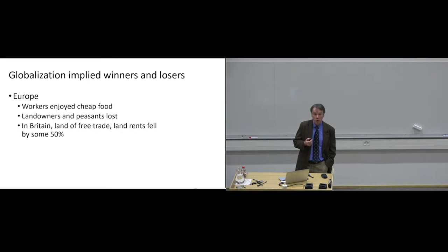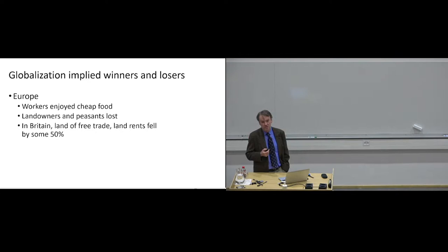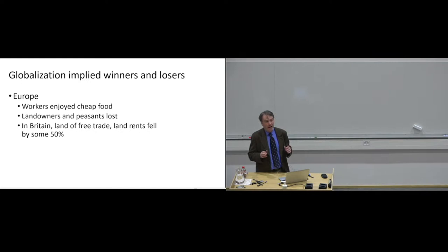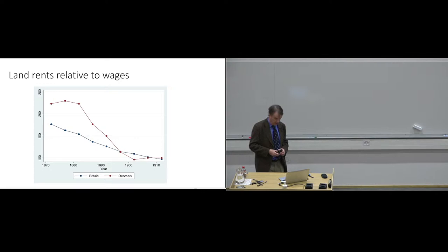And in Britain, which is the country where we can see the experiment roll through unimpeded by trade policy considerations, land rents fall by some 50%. And using the tools available at our time, we convinced ourselves that actually the bulk of that was due to trade and to these falling food prices. So you have globalization implying changing prices, implying winners and losers.